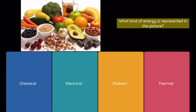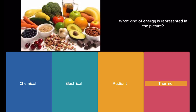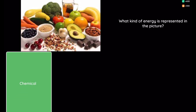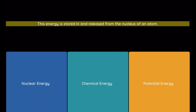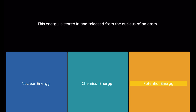Question: What kind of energy is represented in the picture? Option 1: chemical. Option 2: electrical. Option 3: radiant. Option 4: thermal. Question: This energy is stored in and released from the nucleus of an atom. Option 1: nuclear energy. Option 2: chemical energy. Option 3: potential energy.